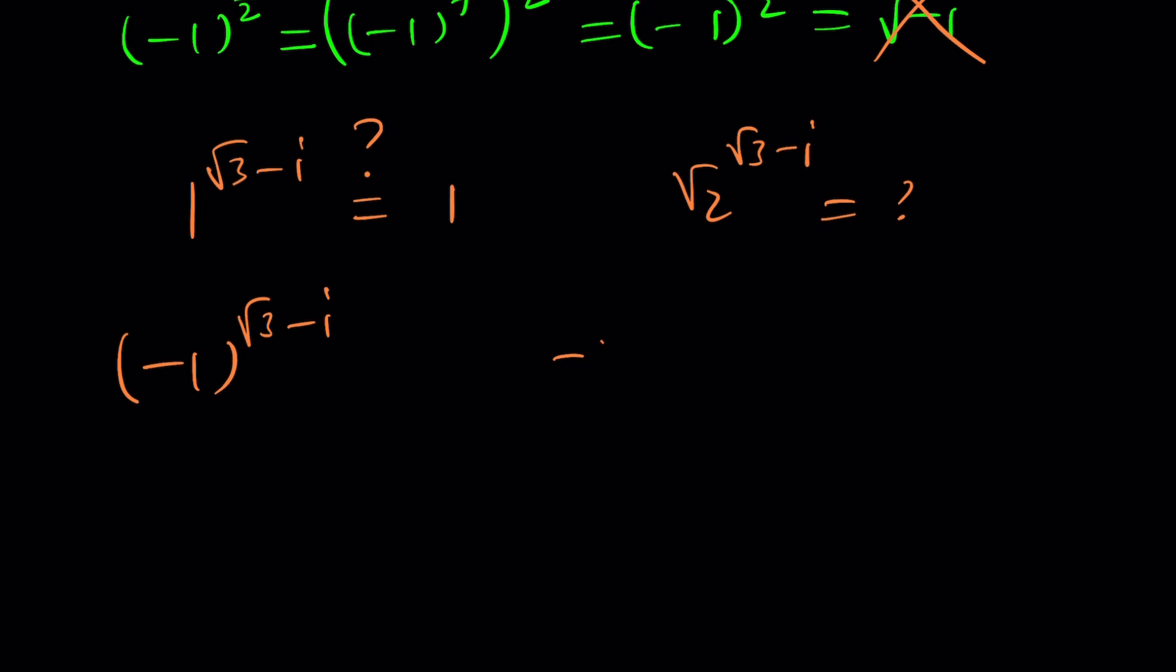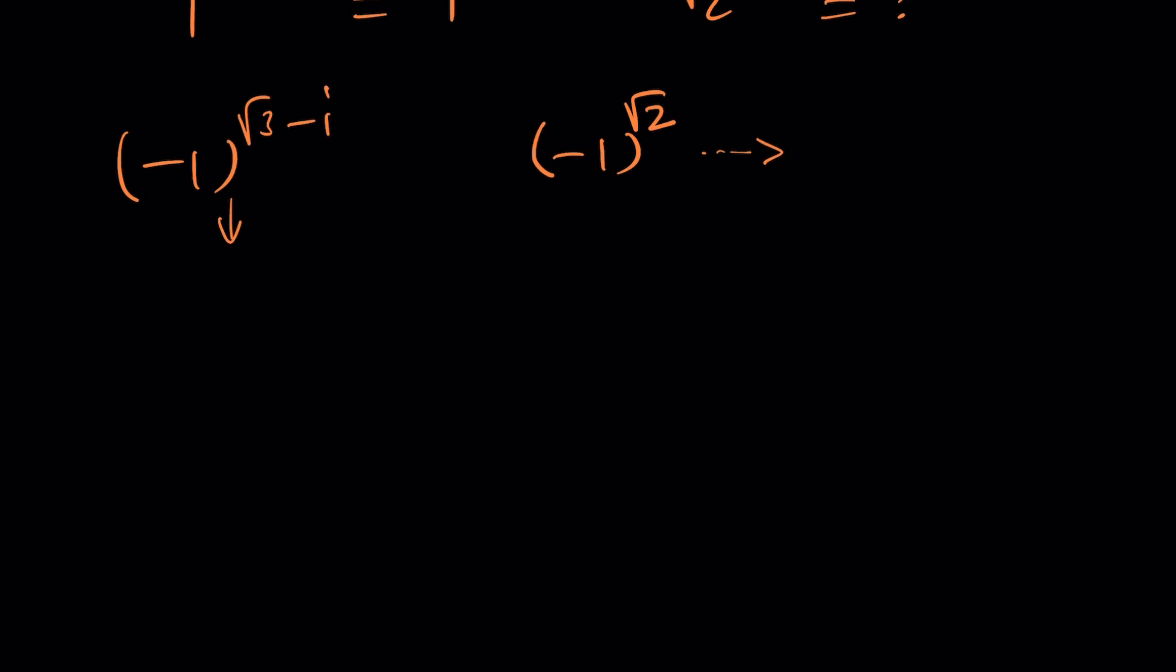I think in another video we did negative one to the power square root of two which is raising a negative number to an irrational power which is also pretty interesting. Go ahead and check it out. So to be able to simplify this we need to consider complex exponentiation. What is that supposed to mean? It means that whenever you have two complex numbers z and w and you try to exponentiate with them like z to the power w, this doesn't have any meaning if you don't have a well defined definition.